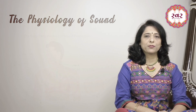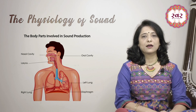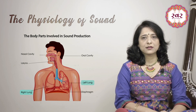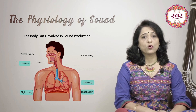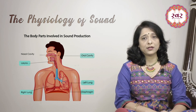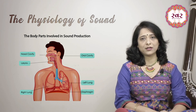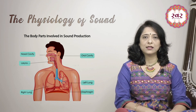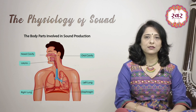The body parts involved in sound production are the lungs, diaphragm, larynx or voice box, vocal folds or chords, glottis, oral cavity, nasal cavity, tongue, lips, soft palate, etc.